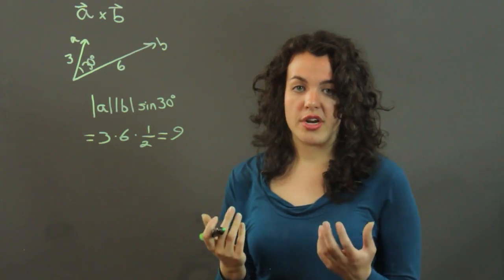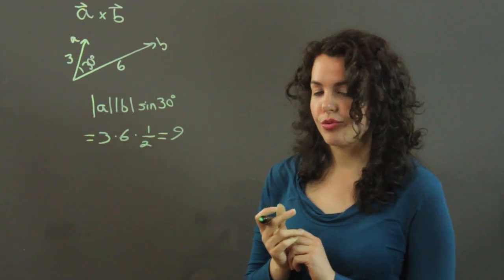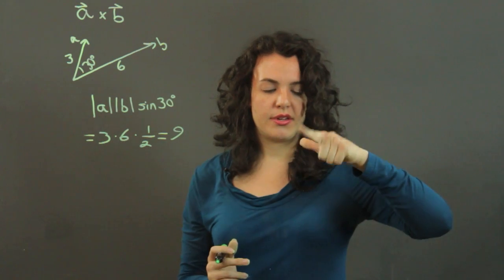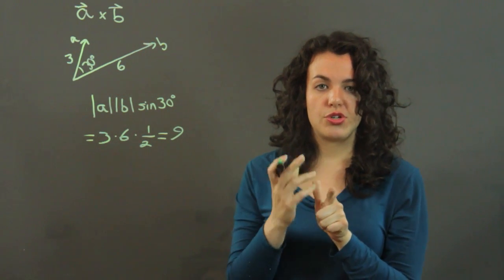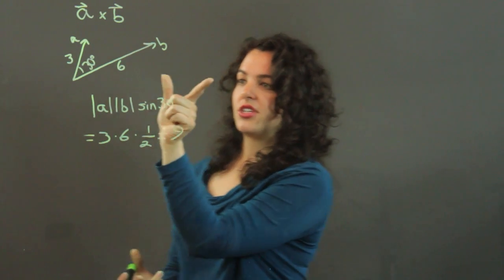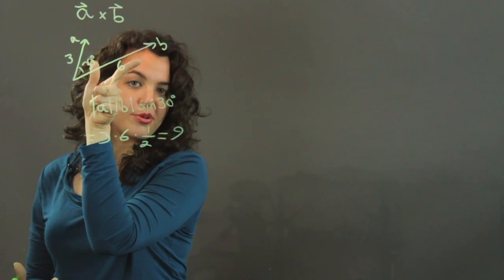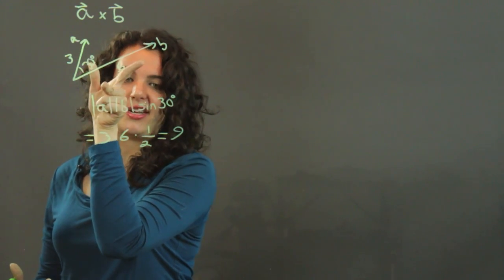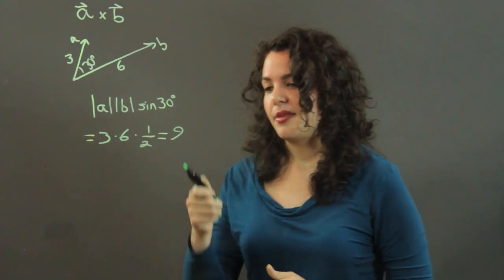What we need is the direction, because ultimately the cross product is itself a vector. For this we use the right-hand rule. You take your thumb, and this represents vector A, and this finger represents vector B. The cross product is always perpendicular to the two initial vectors. We match them up, and your resultant vector goes in the direction that your middle finger is pointing in — straight at you — going at you, is our cross product with a magnitude of 9.